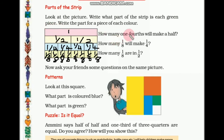So how many 1 fourths will make a half? Let's see here — half is here, so how many 1 fourths make a half? 2 one-fourths. Correct. So we can write: 2 one-fourths will make a half.